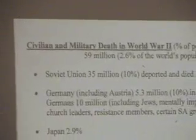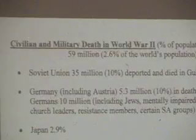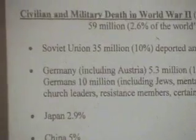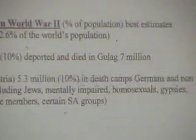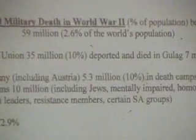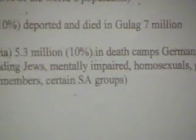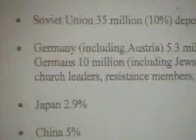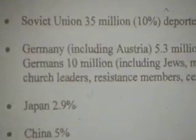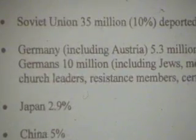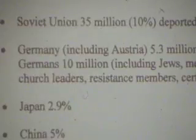If we look at the number of deaths during World War II particularly as a percentage of population, we find that the Soviet Union lost about 10% of its population. About 70 million people were citizens whom Stalin deported into the Gulag because they were considered unreliable, including the Kazakhs and others, and a number of those died there. In Germany and Austria, estimates range from 5 to 10 million people who died in the war, but about 10 million civilians were transported into death camps and died there.